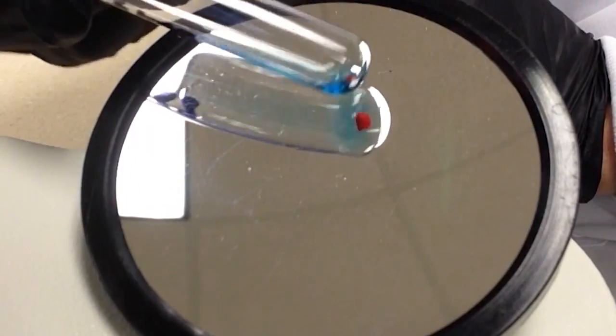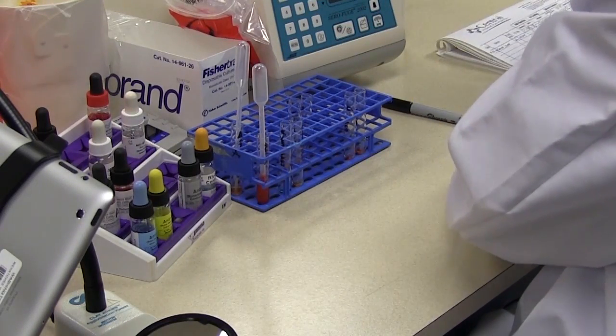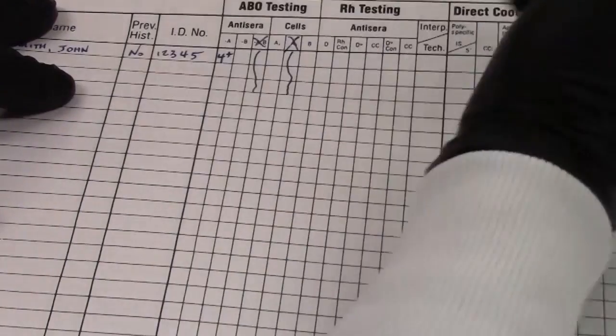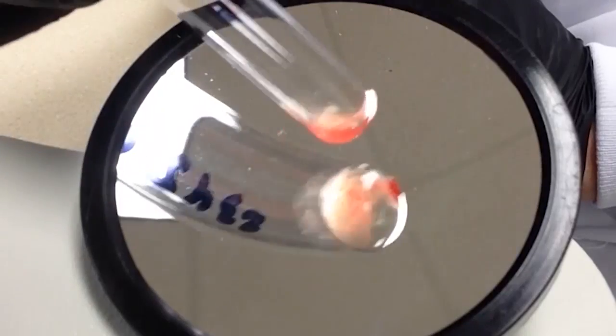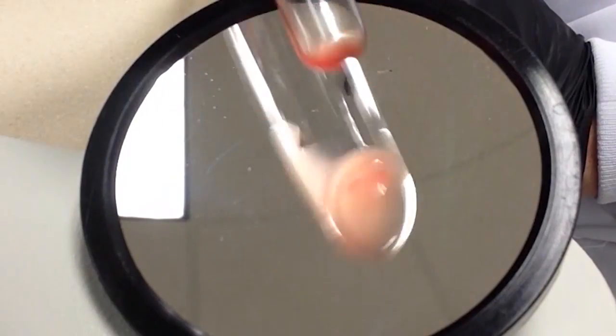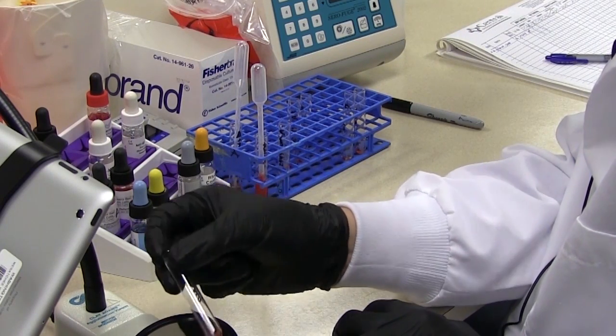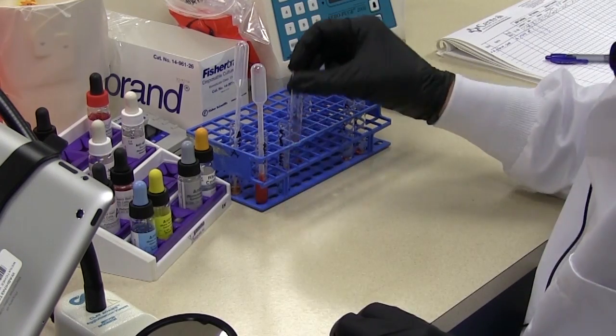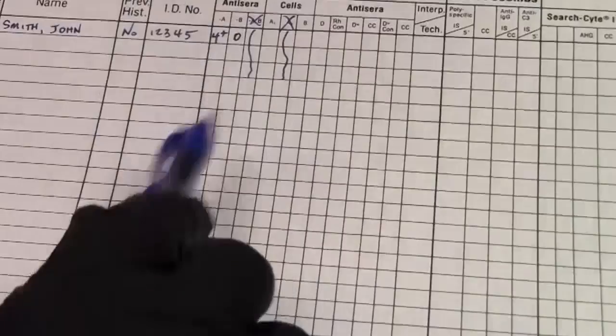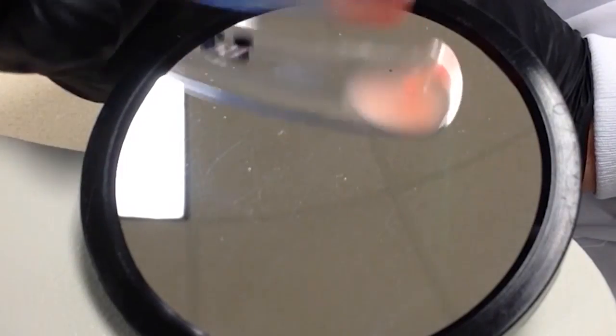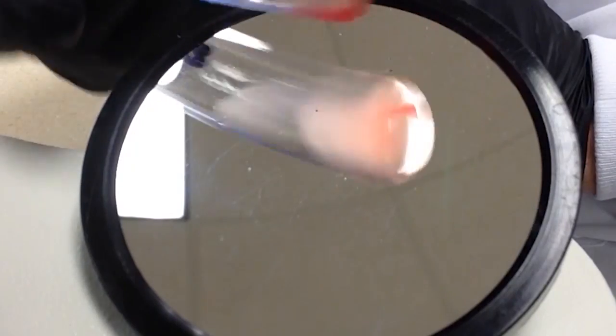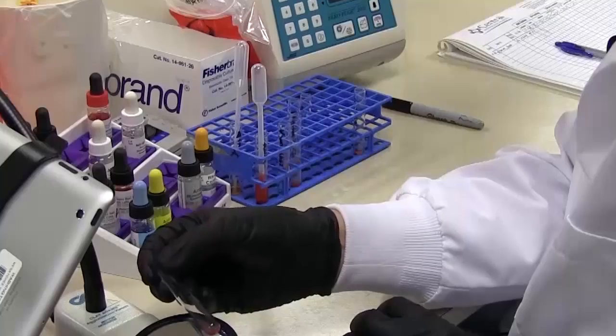So this is the A1. Okay so it looks like we have a four plus button there. So on our results log here we'll put four plus. Okay anti-B kind of tricky here getting it in view for you guys to look at in the mirror. Okay so that's coming off smoothly and I don't see any kind of aggregation of cells so that is a negative which we will record as zero.